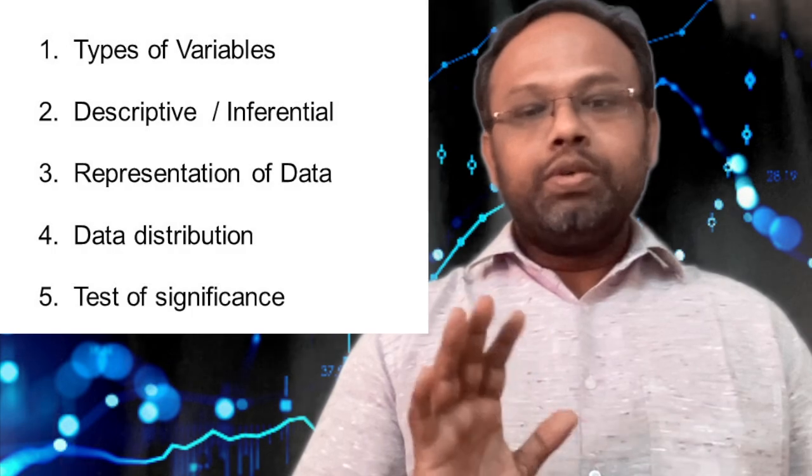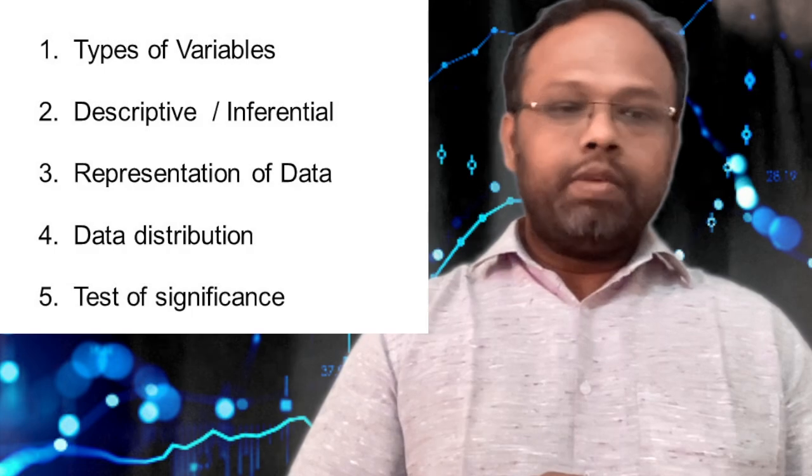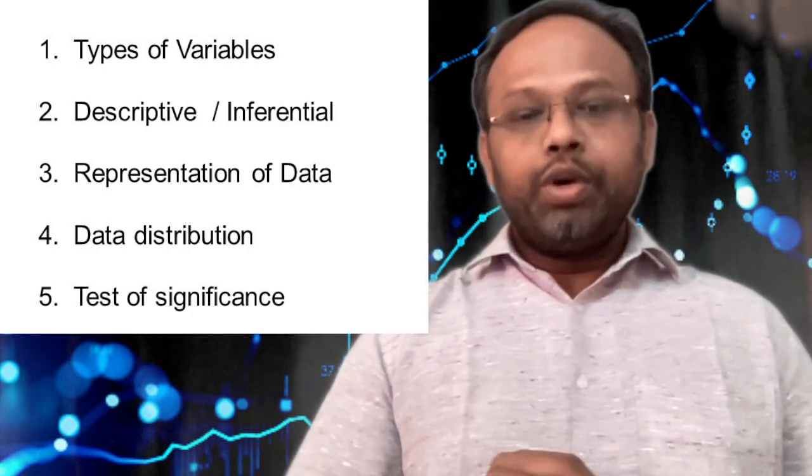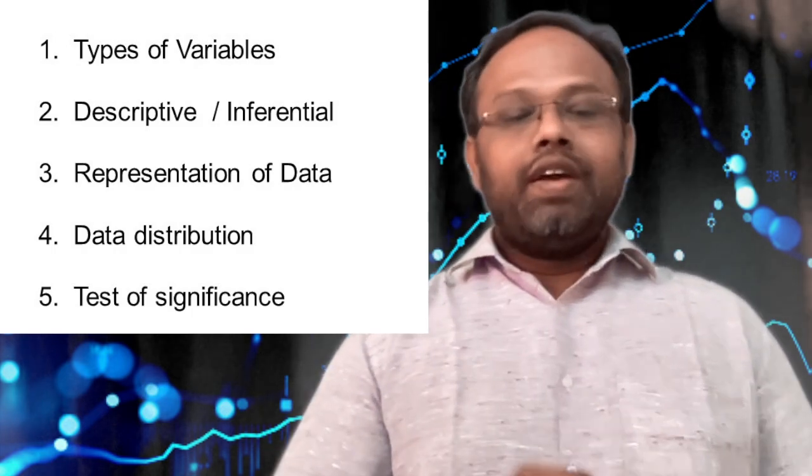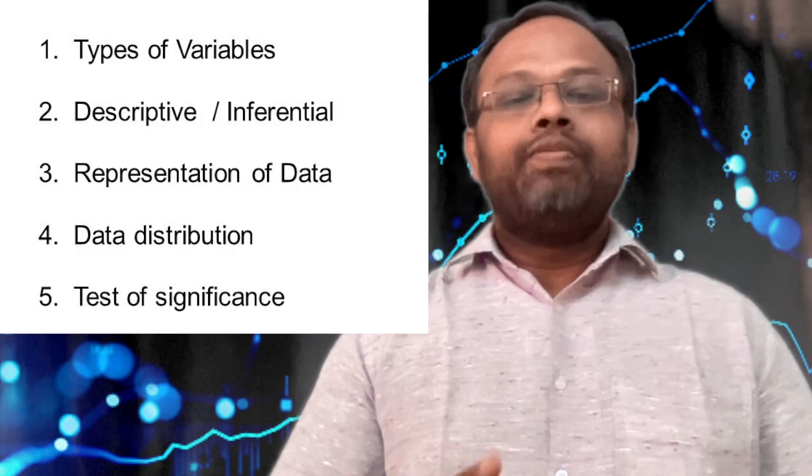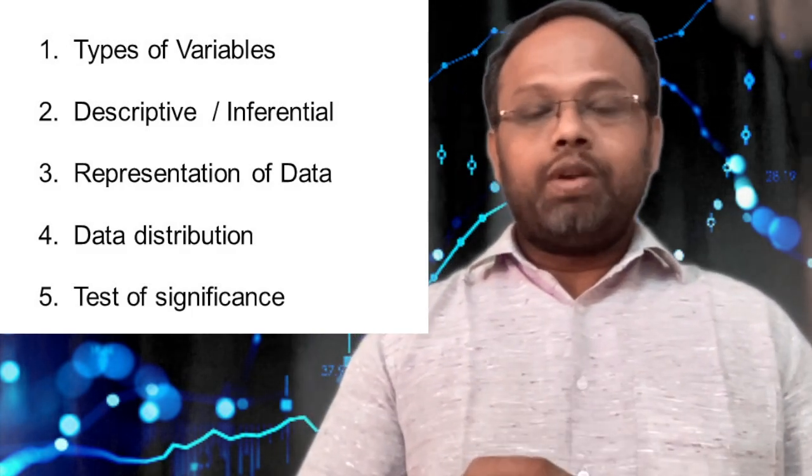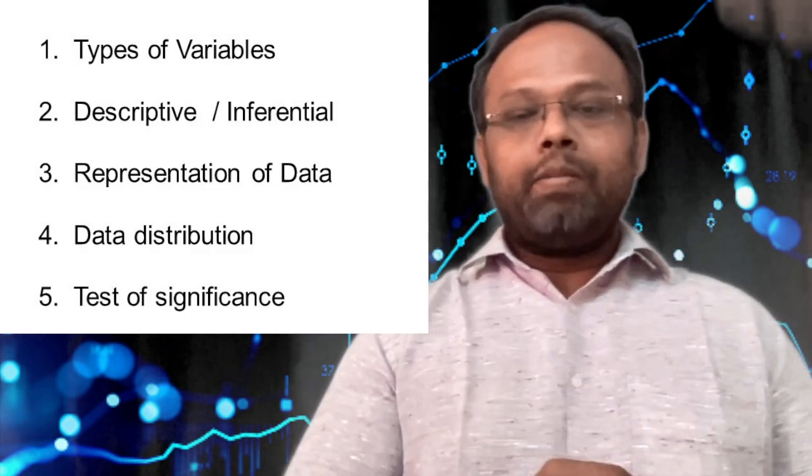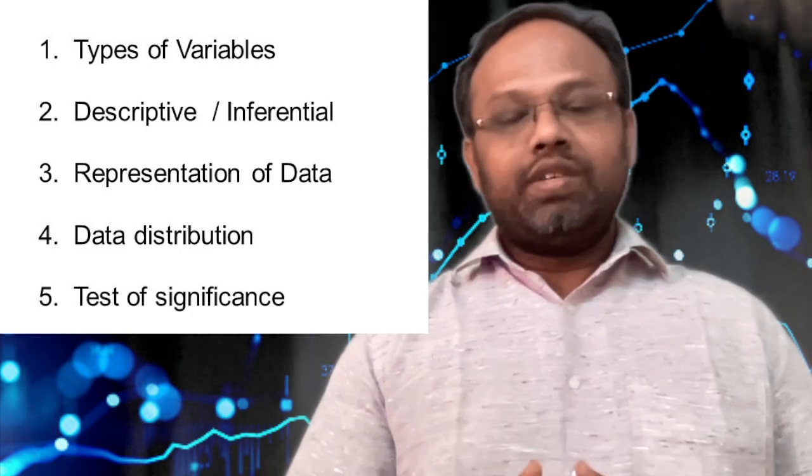To sum up, you have to understand five basic concepts to do quantitative research. That is number one: the type of variables. Number two: whether you are going to do descriptive statistics or inferential statistics. Number three: whether you are going to represent the data or visualize the data. Then four: how the data is distributed—whether it is normal or not normal. Based on that you have to apply parametric and non-parametric tests. And the fifth question is your test of significance.